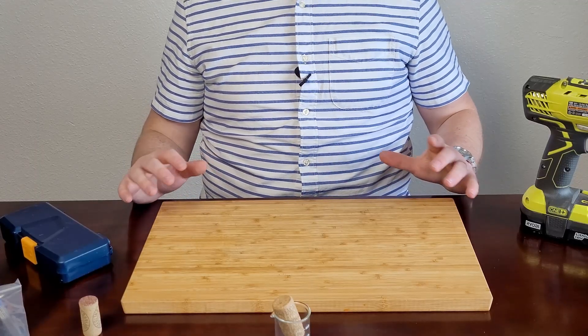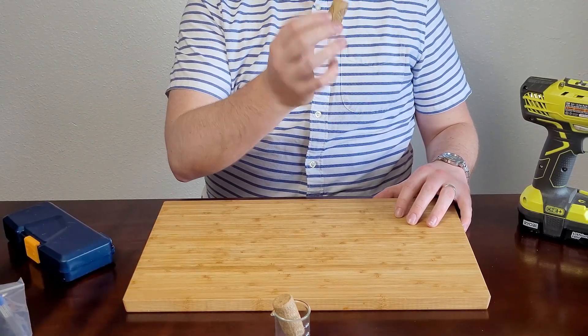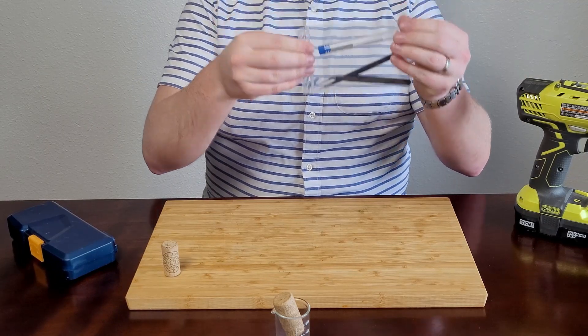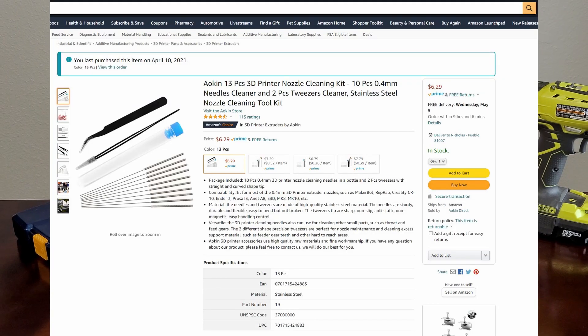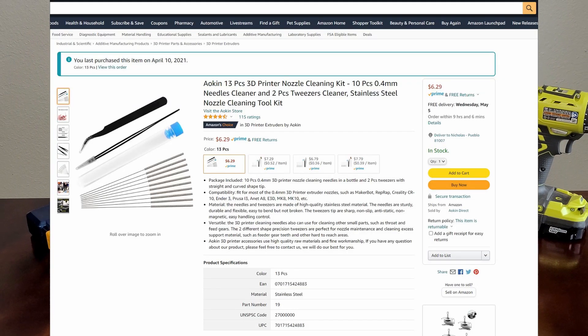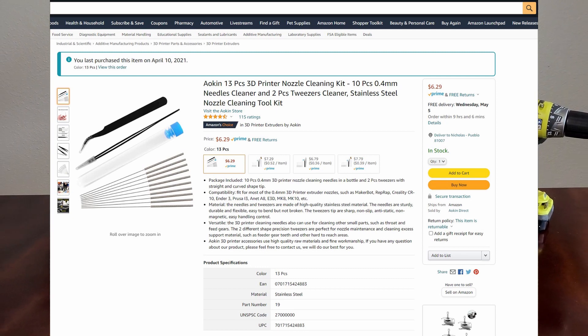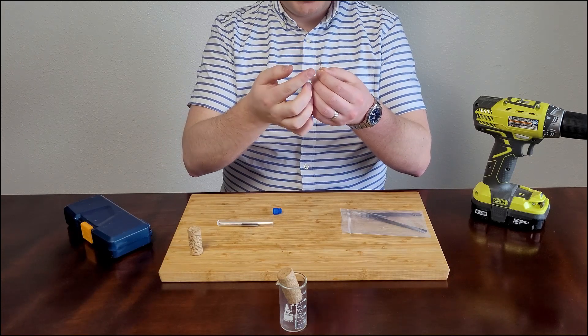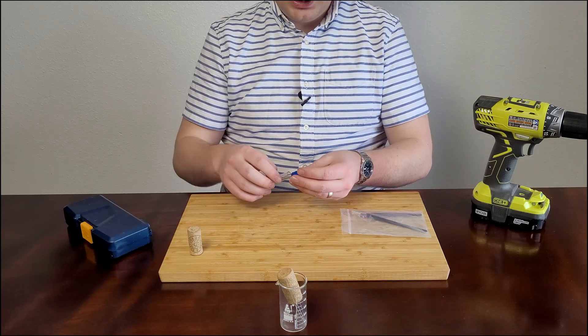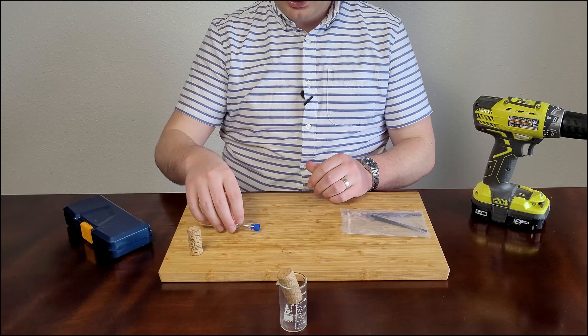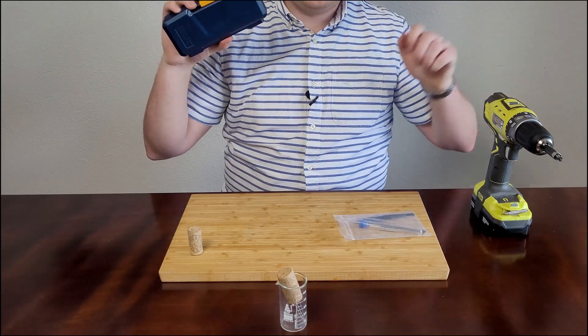All right, so I've gone ahead and gathered a few supplies. All you will need is, first of all, a used wine cork, some very fine needles. I found these on Amazon for $7. They are, I think, intended for cleaning 3D printer nozzles, but they have a diameter of 0.4 millimeters. They have this nice little coil on the end that makes it really easy to put them into a cork, and then you'll just need a drill with the proper drill bits.